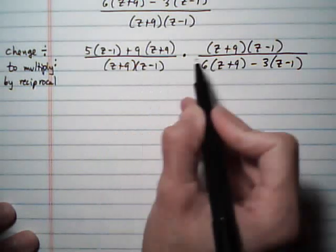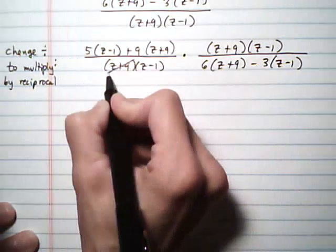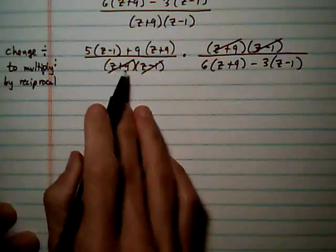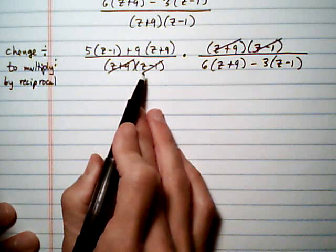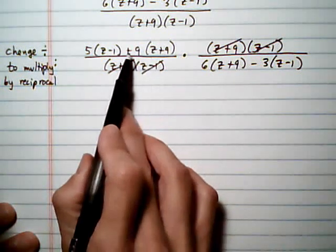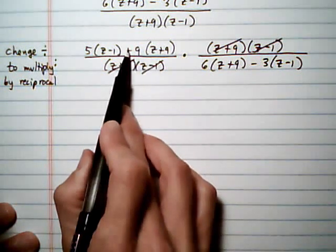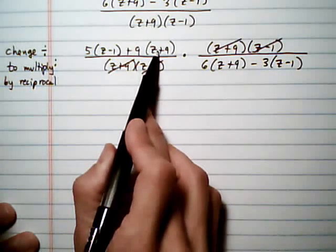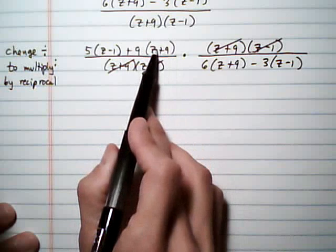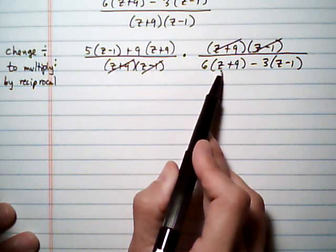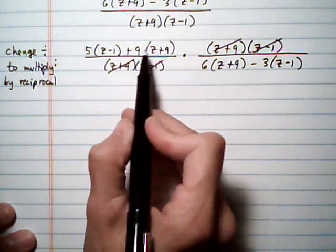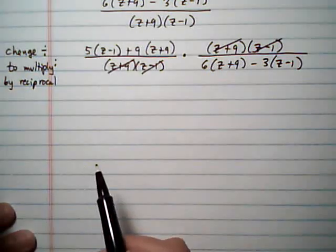z plus 9 minus 1, and there's common factors up here. So as soon as you see common factors, or things that are being multiplied together like that, we can cancel them. When you have pieces that are being added or subtracted together, not multiplied together, we cannot cancel. So for example, we cannot cancel z plus 9 top here with z plus 9 bottom here, because right now we would not be canceling common factors if we did that, because these items are not being multiplied together.